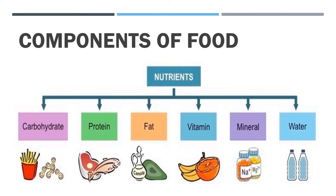What do different food items contain? We know that each dish is usually made up of one or more ingredients. These ingredients contain some components that are needed by our body. These components are called nutrients.